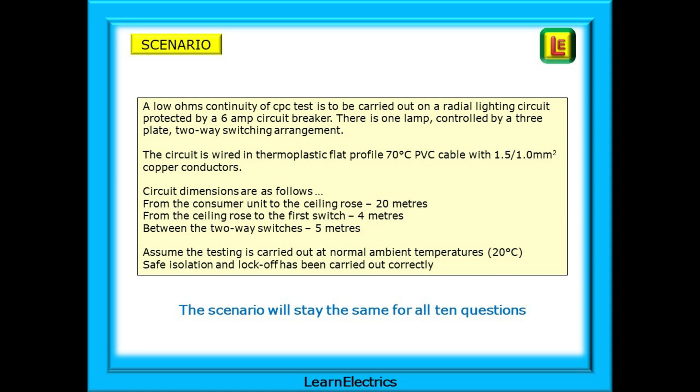The circuit dimensions are as follows. From the consumer unit to the ceiling rose 20 meters, from the ceiling rose to the first switch 4 meters and between the two-way switches 5 meters. Assume the testing is carried out at normal ambient temperatures which we acknowledge as 20 degrees Celsius. Safe isolation and lock off has been carried out correctly and the circuit is dead ready for testing.